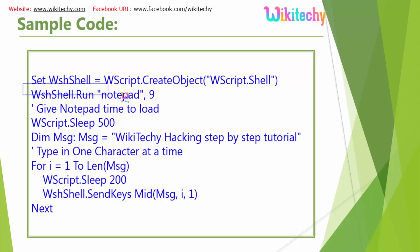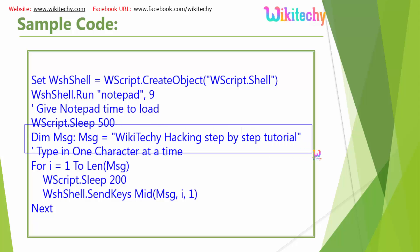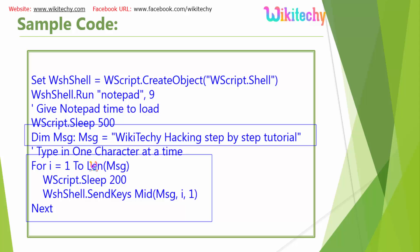You can see the Notepad is invoked. The value 9 indicates to open and activate Notepad. Wscript.sleep 500 indicates the time to wait for Notepad to load. Afterwards, I am trying to give a message: 'wikiteki hacking step by step' — this is the message I am typing into Notepad. The for loop runs from i equals 1 to the length of the message. For each iteration, it waits 200 milliseconds to type each letter, then sends the key using mid of message, i, 0, and 1. The first letter is printed, then i becomes 2, and the next letter is printed. This is how the program executes.